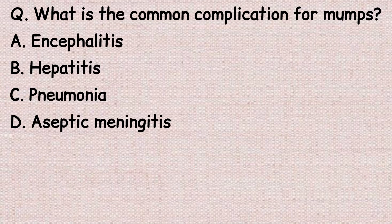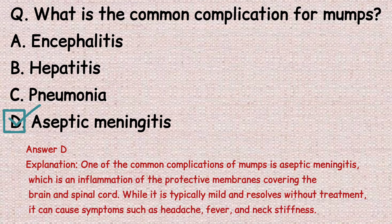The next question: what is the common complication for mumps? Option A: encephalitis. Option B: hepatitis. Option C: pneumonia. Option D: aseptic meningitis. The correct answer is option D, aseptic meningitis. One of the common complications of mumps is aseptic meningitis, which is an inflammation of the protective membranes covering the brain and spinal cord. While typically mild and self-resolving, it can cause symptoms such as headache, fever, and neck stiffness.